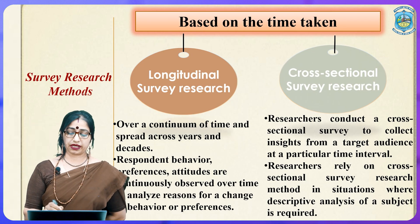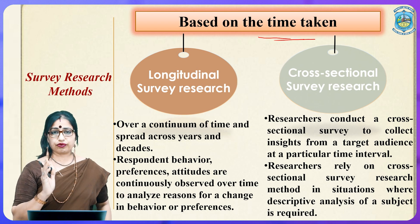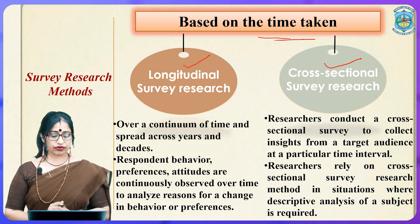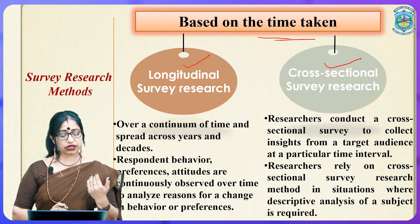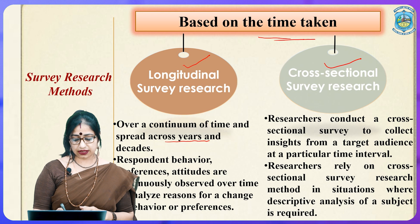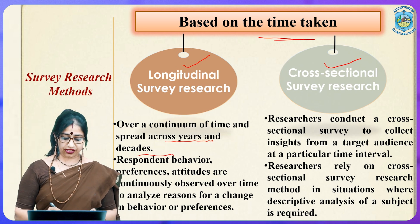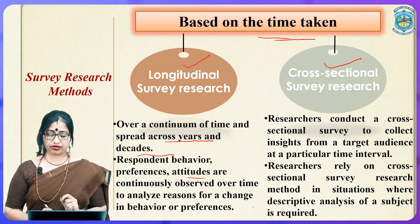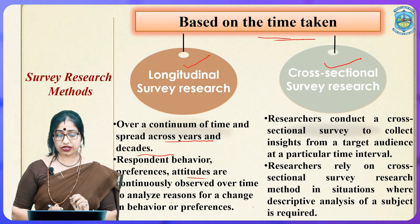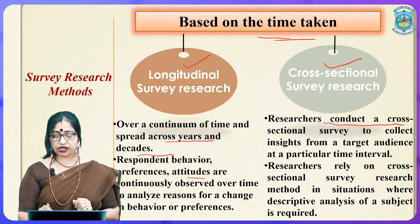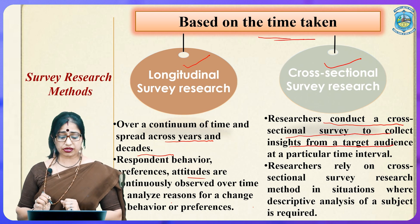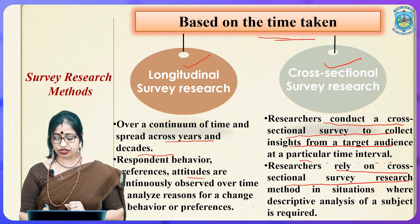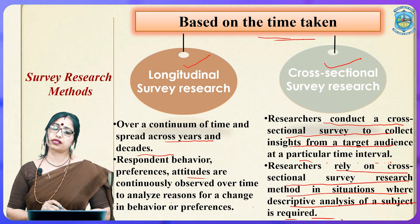Survey research methods based on time can be divided into two: longitudinal survey research and cross-sectional survey research. In longitudinal survey research, respondents' behaviours, preferences, and attitudes are continuously observed over time — across years and decades — to analyze the reasons for change. In cross-sectional survey research, researchers collect insights from the targeted audience at a particular point in time or interval. This method is relied upon where descriptive analysis of a subject is required.